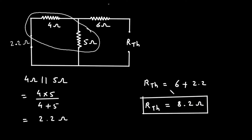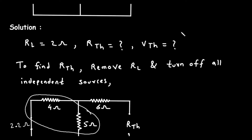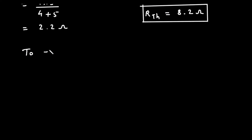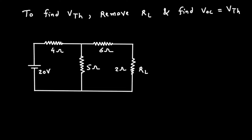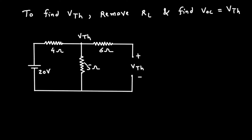Now we got the value of Thevenin's resistance. Next we have to find the value of Thevenin's voltage VTH. To find VTH, we will remove RL and find VOC, which is equal to VTH. In this circuit, if we remove RL, this will be our VTH, with positive terminal and negative terminal marked. Since this is open circuited, the current through the 6 ohm will be 0. That means the voltage across this 5 ohm will be our VTH.